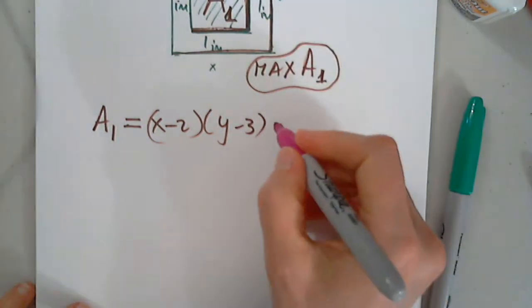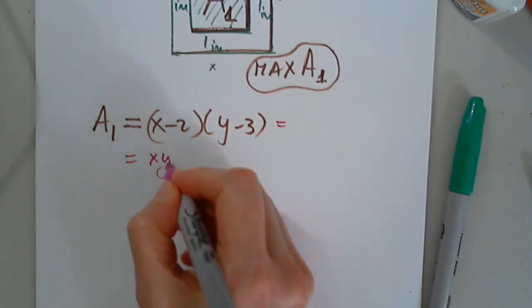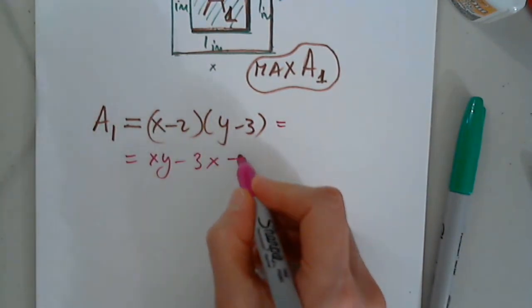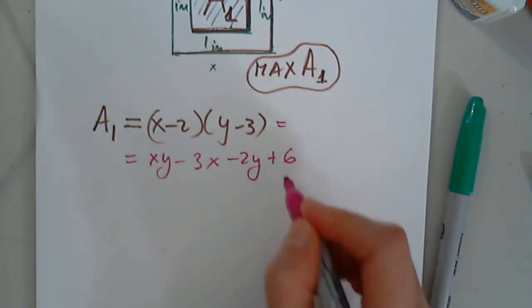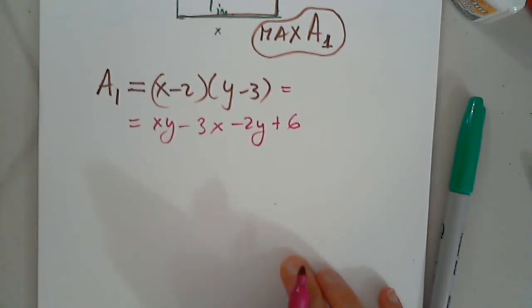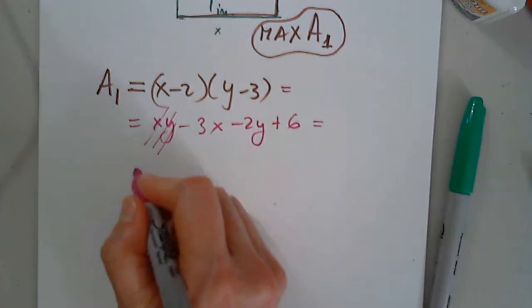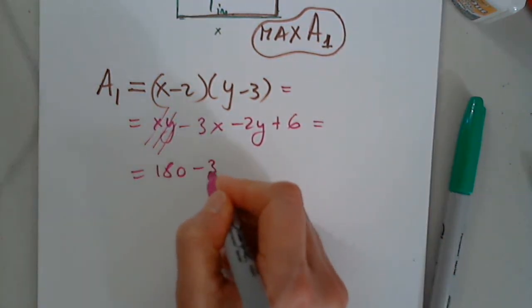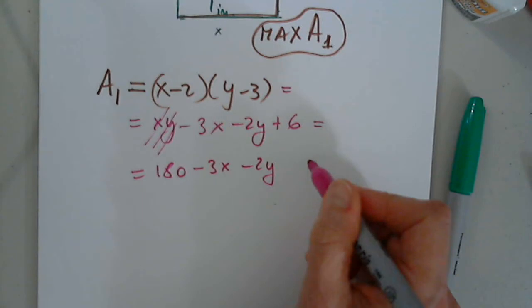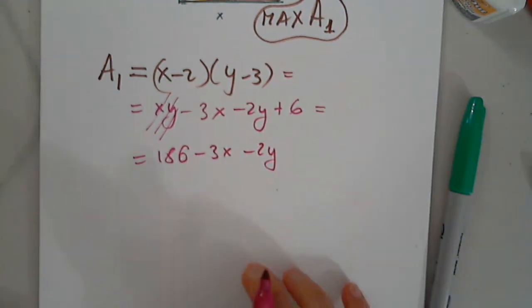I will distribute. I get XY, I get minus 3X, I get minus 2Y, and I get plus 6. I will replace XY because it's 180. Minus 3X minus 2Y plus 6. I'm going to edit here. 186. That's how lazy people do things.